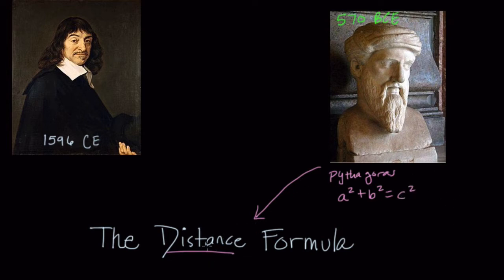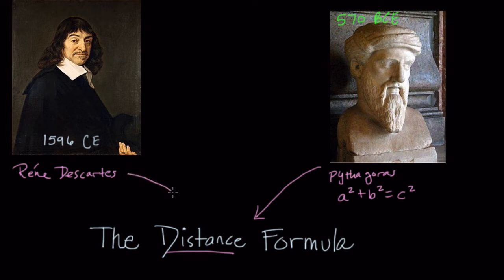That idea is fundamental in the distance formula because when we take the ideas of René Descartes, who many years later really formalized the idea that we can graph algebraic and geometric expressions on a plane, when he comes out with that idea and we merge it with the Pythagorean theorem, what we get is the distance formula. We could call it the Pythagorean theorem on a coordinate plane formula, because that's really what it is.